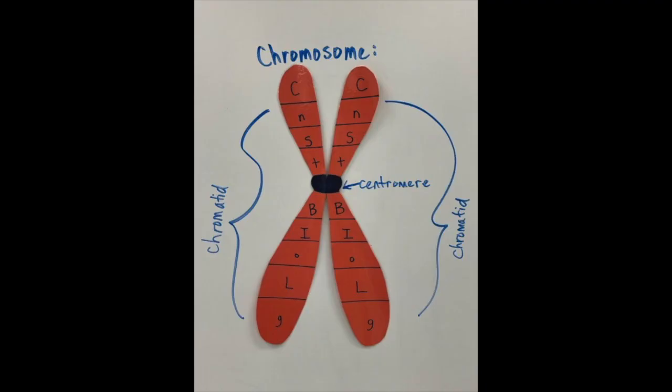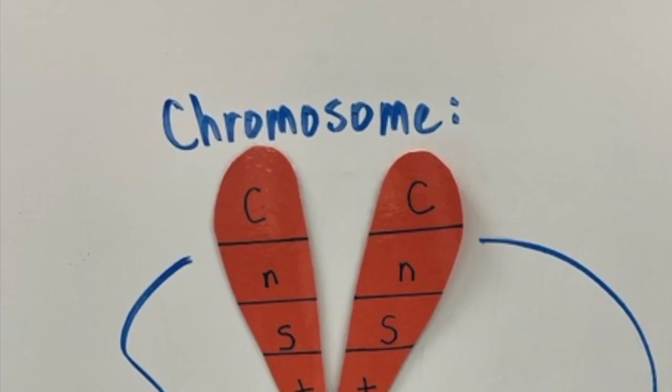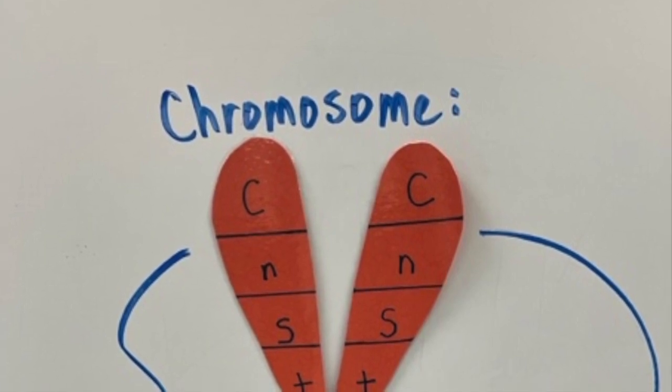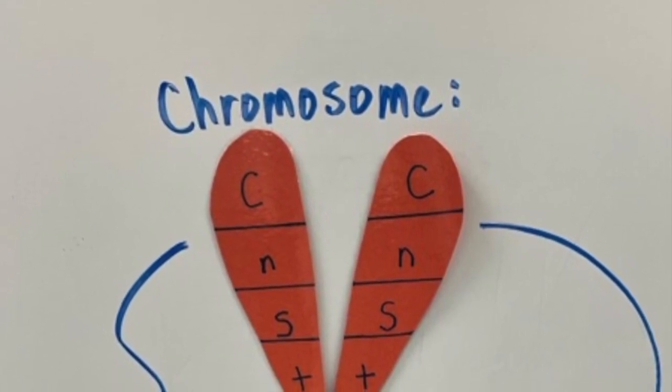And the two sides that are held together by the centromere are each called a chromatid. Now, generally speaking, they are referred to as sister chromatids. However, what I want to take particular attention and draw your attention to is the different segments on the chromatids.